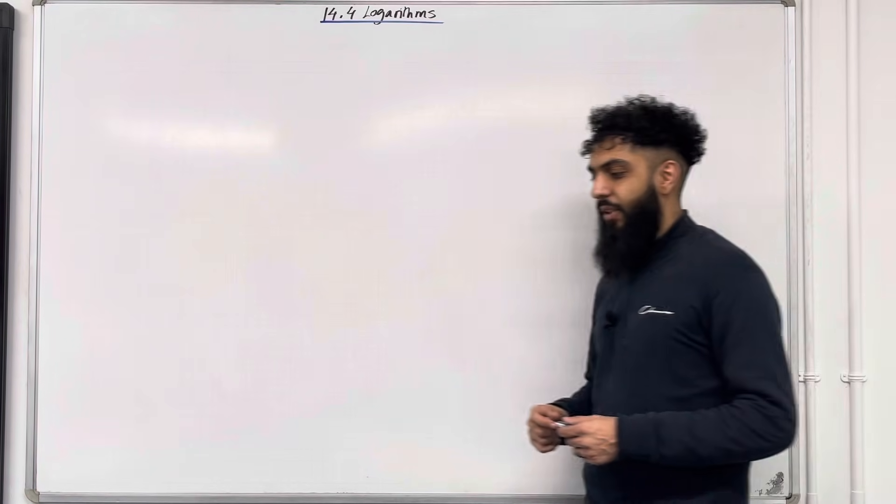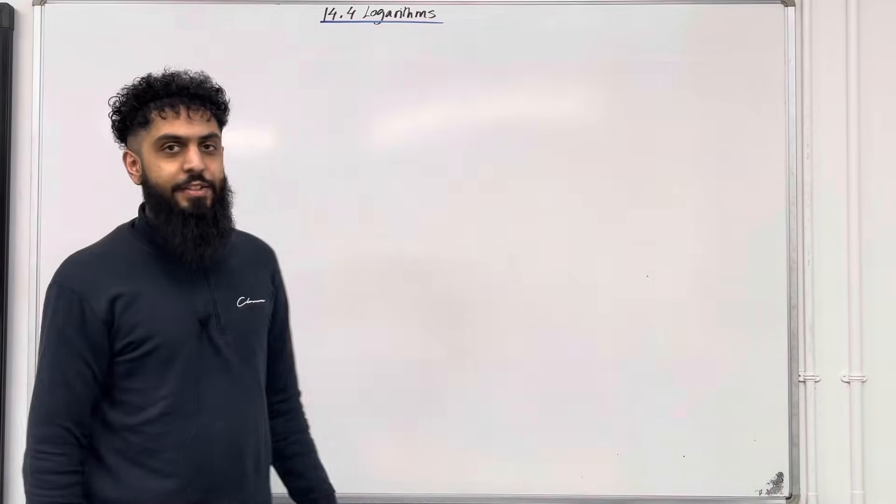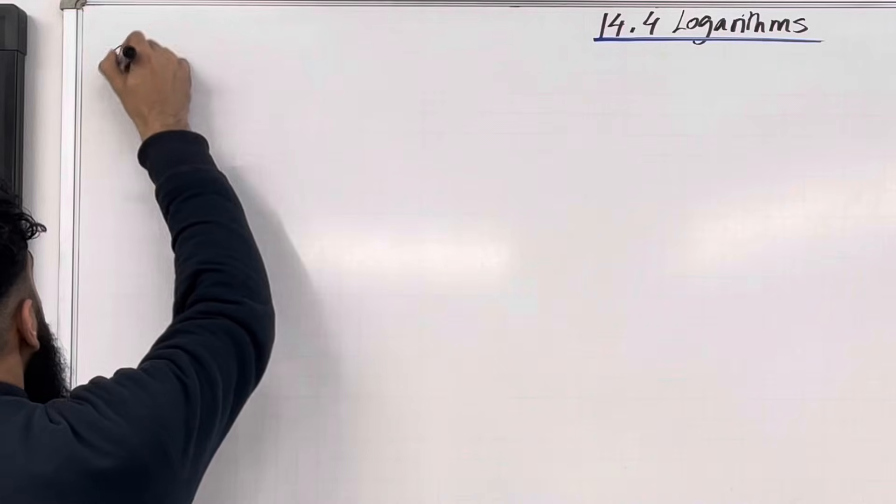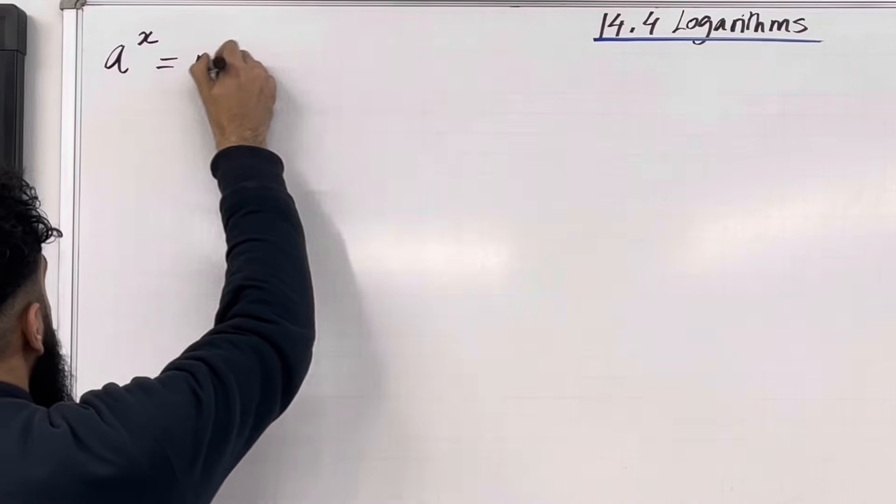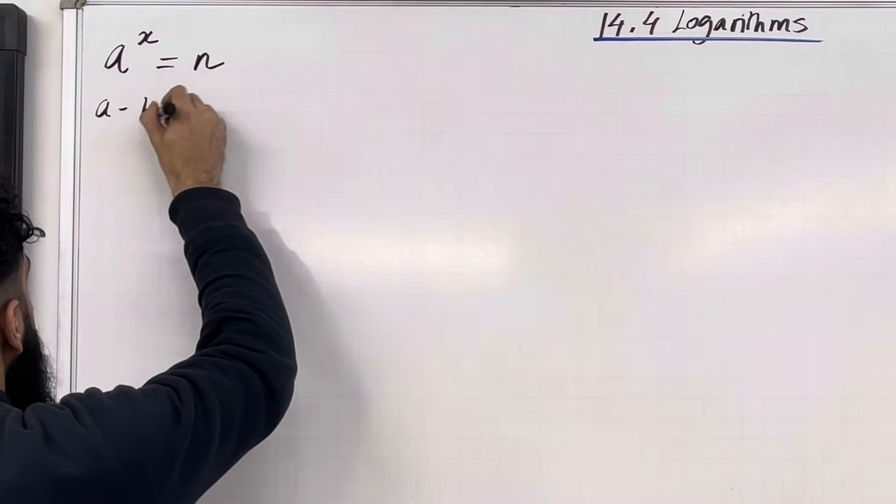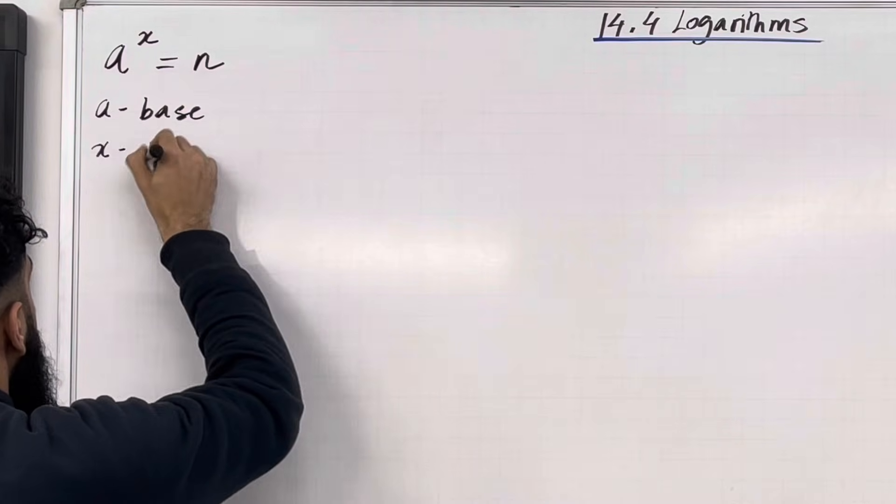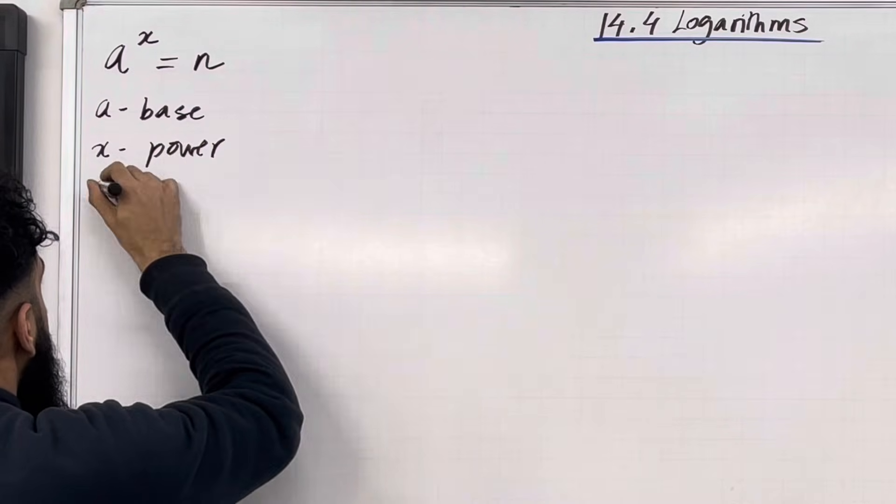Let's go through the key facts of this section. Ladies and gents, I've got the following: A to the power x equals n. A is called the base, x is called the power, and n is a constant.